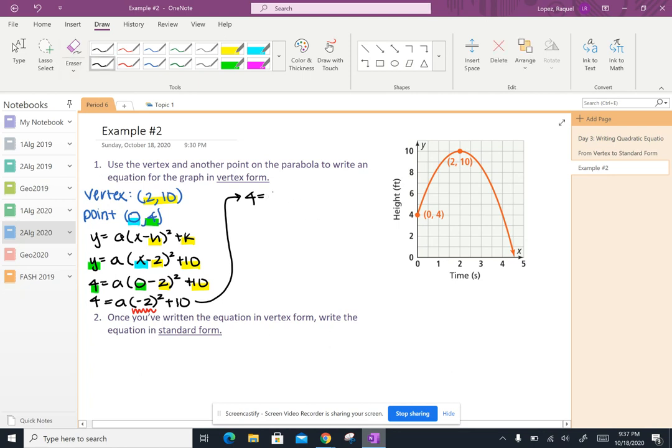or you can even write that as 4a. So I'm going to write that as 4a. So 4a plus 10. And then I can work backwards to solve for a.